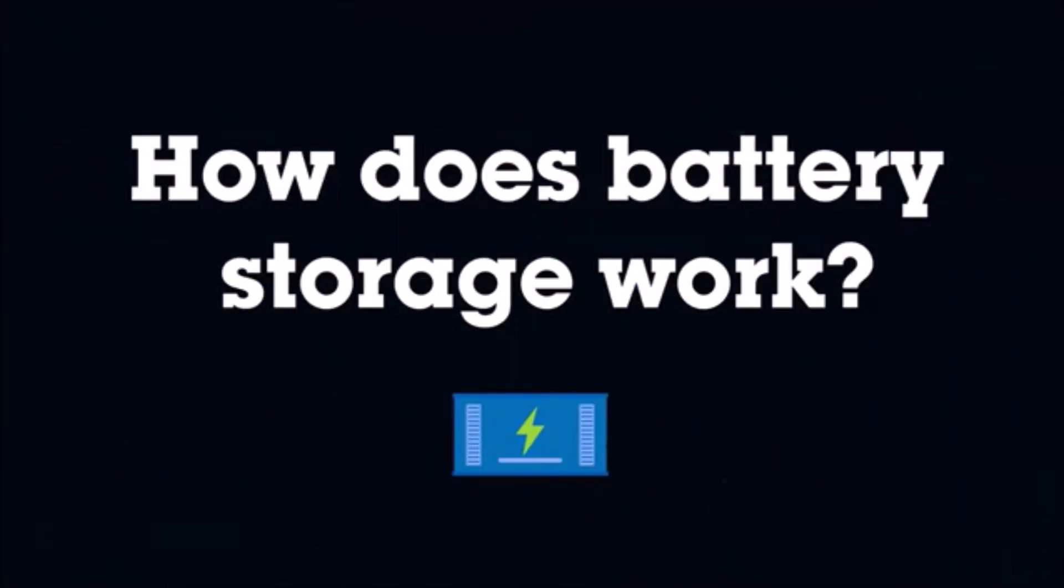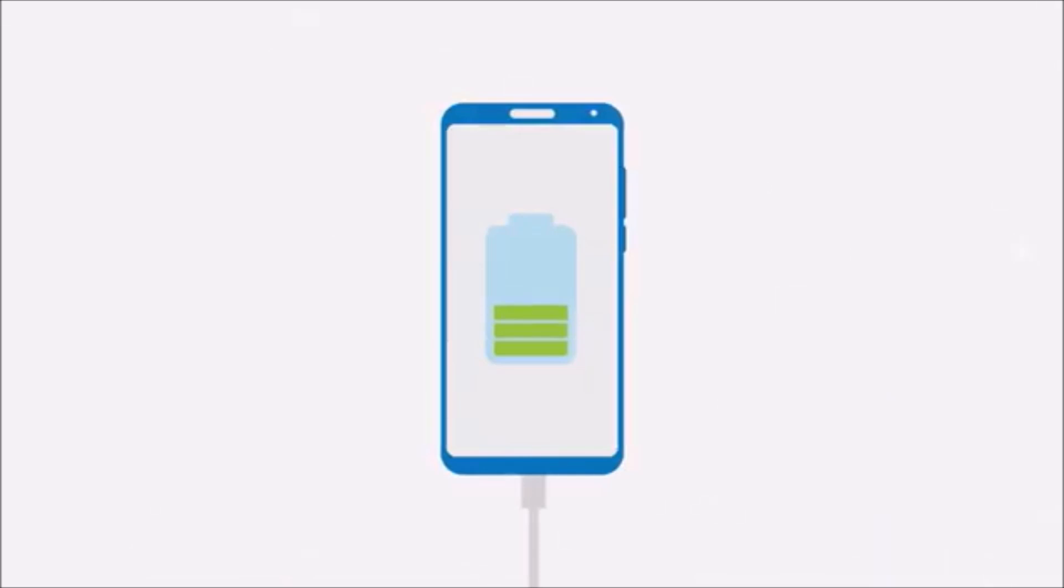How does battery storage work? Grid scale batteries are far bigger and more advanced than the rechargeable batteries in our smartphones. Nonetheless, the fundamentals are very similar. Power goes in, it's stored in the battery, then flows out again when needed.